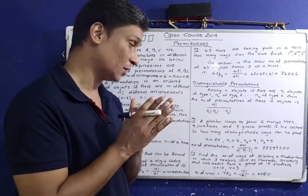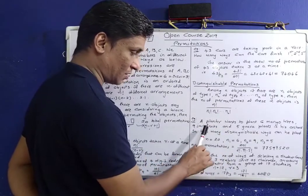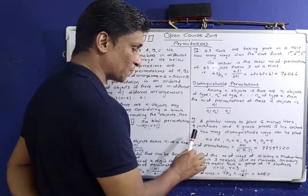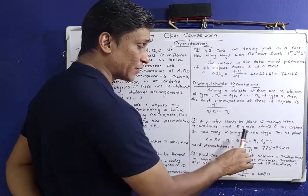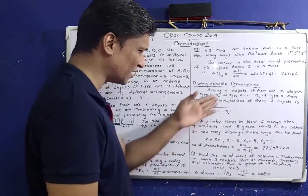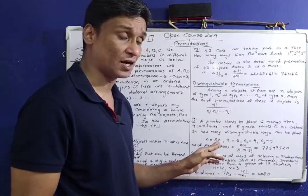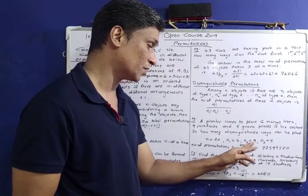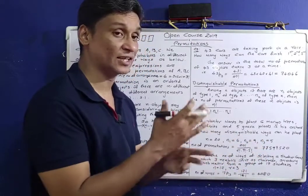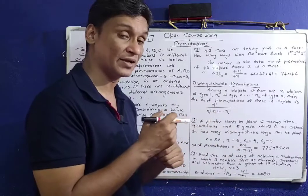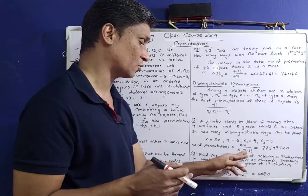Here is an example: a farmer wants to plant 6 mango trees, 9 jackfruit and 5 guava plants in his orchard. In how many distinguishable ways can he plant? The answer is n factorial divided by 6 factorial into 9 factorial into 5 factorial.